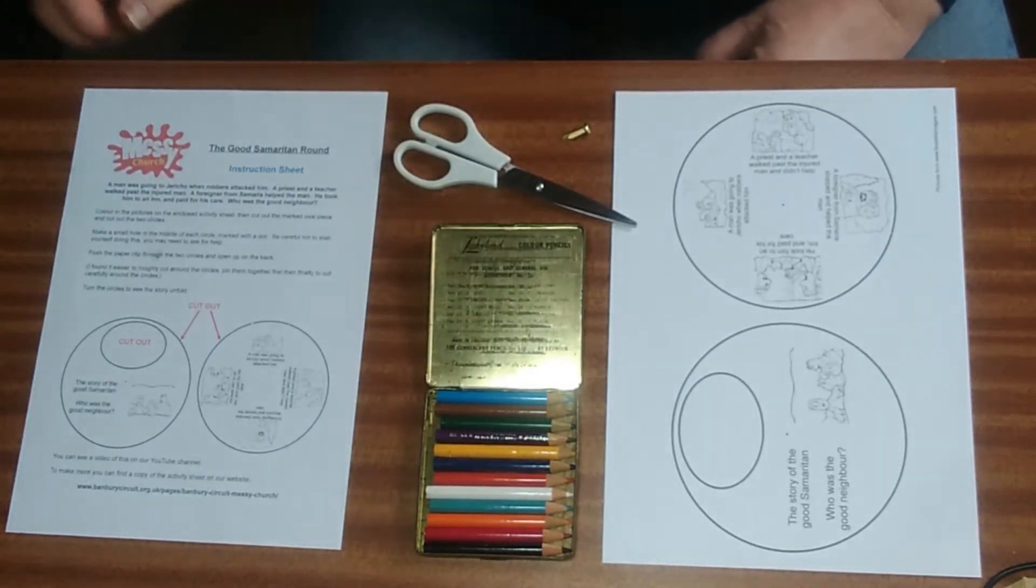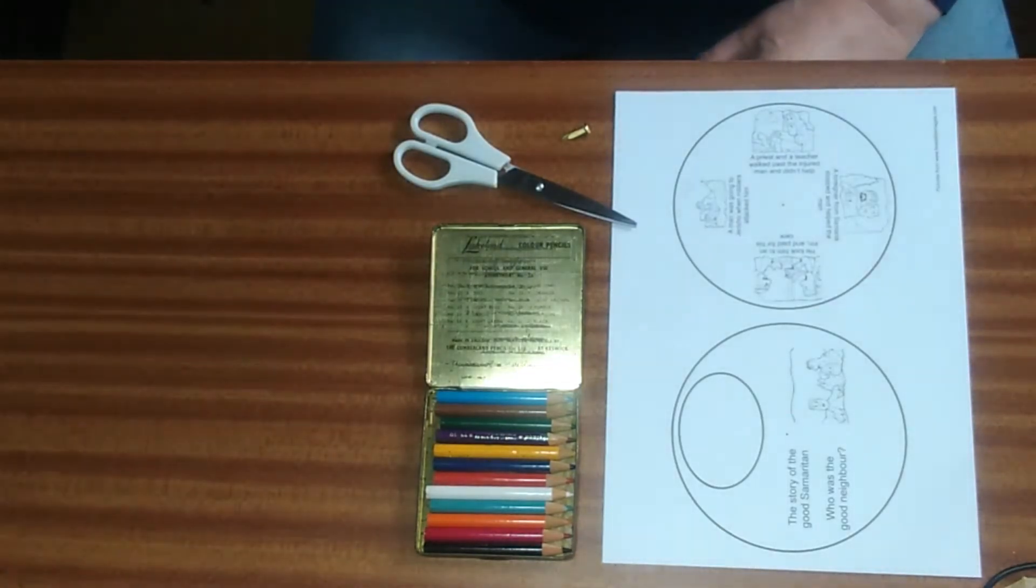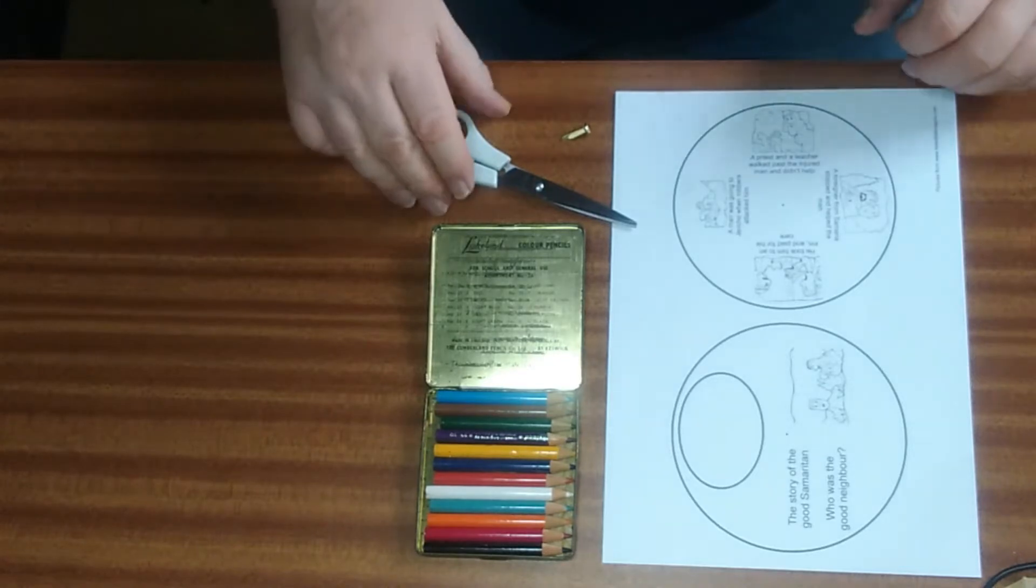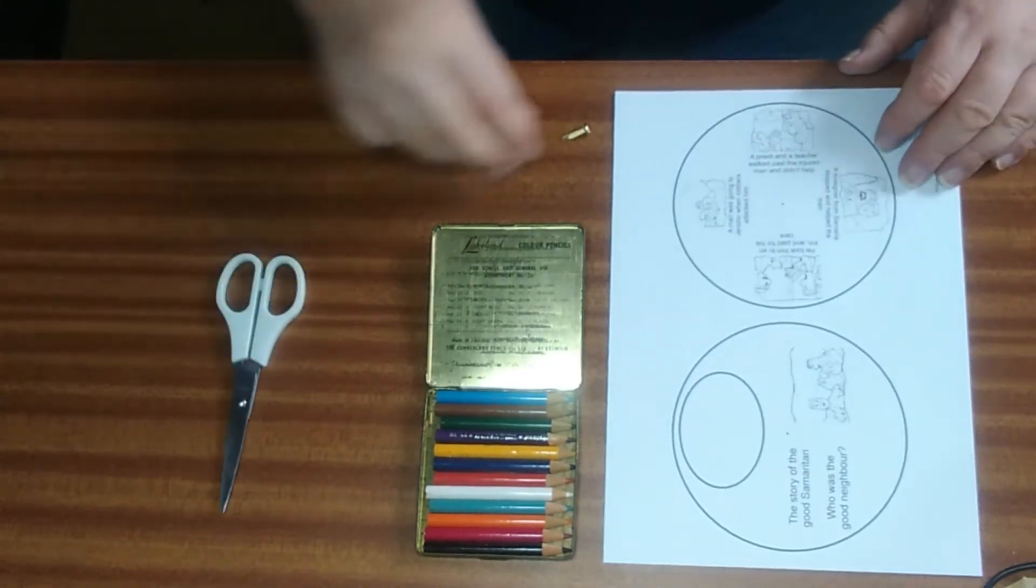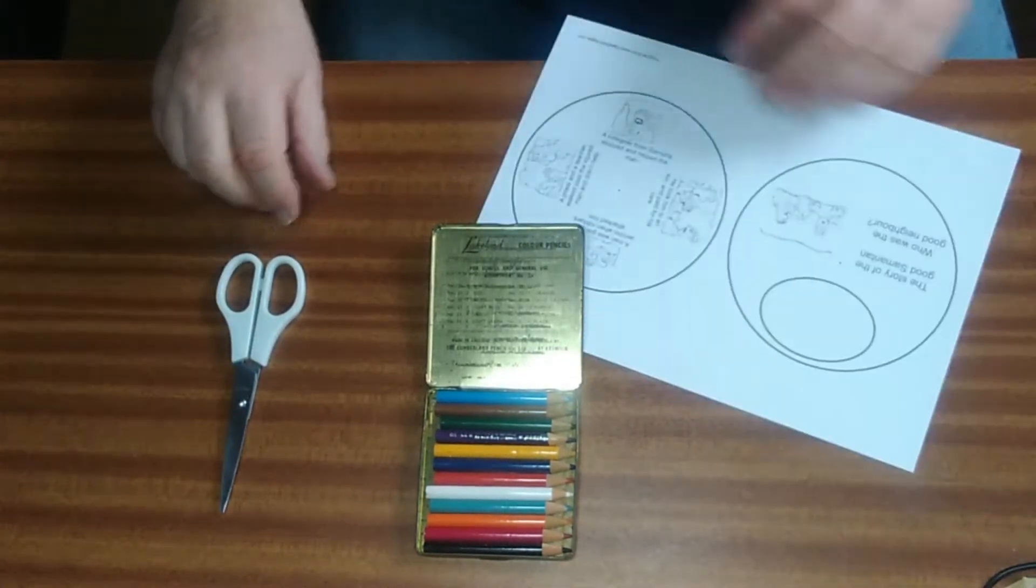Let's begin by putting the instruction sheet aside and moving the scissors out of the way. We'll start by coloring in the pictures.